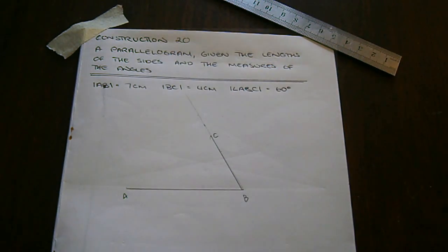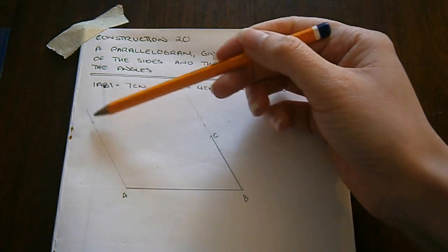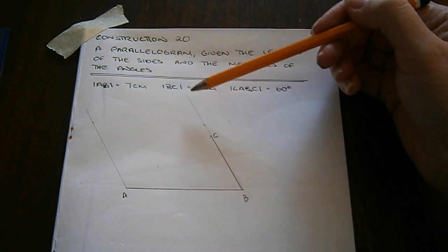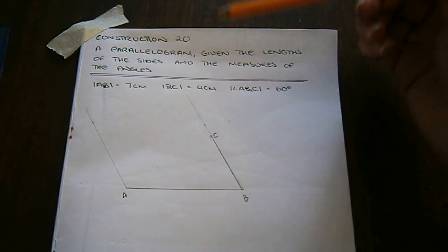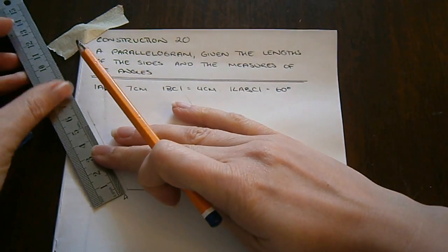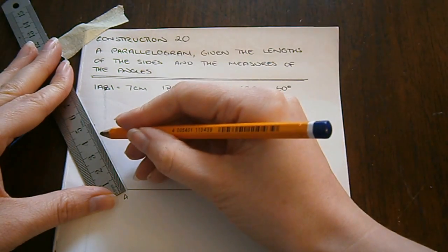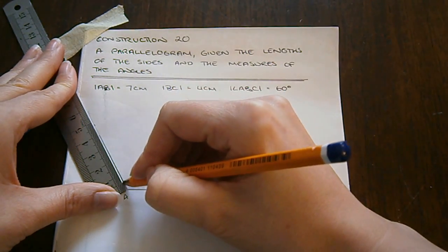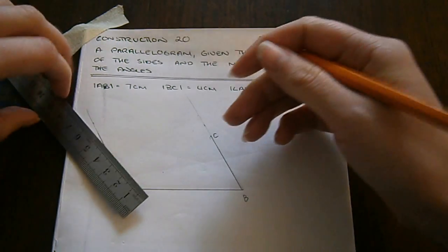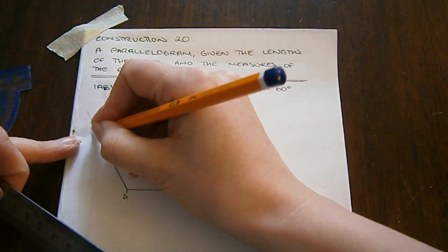Next, I do the same on A. I've drawn my construction line parallel to this line BC, using the protractor. So I check my length, and mark a point 4cm from A along this line. This point is D.